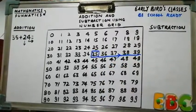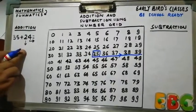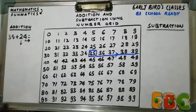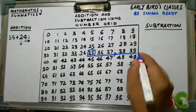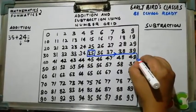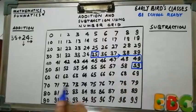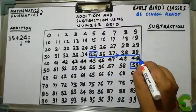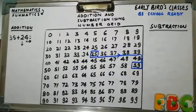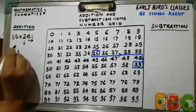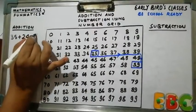Right. Now we have to traverse two places downward. So first, second. Where we reached? We reached at 59. So 35 plus 24 will be 59.